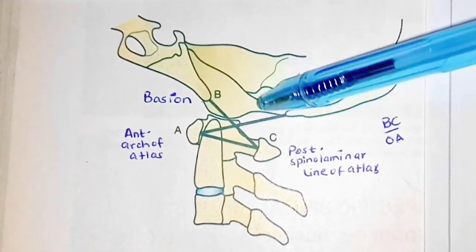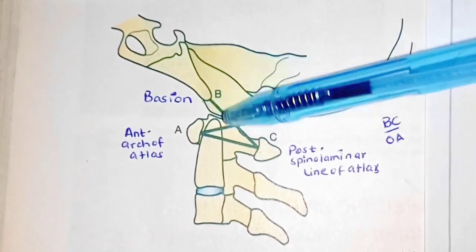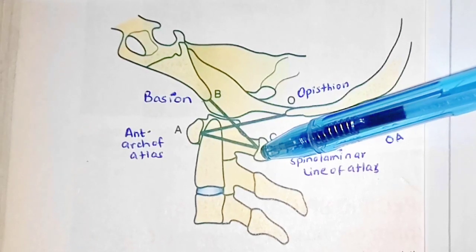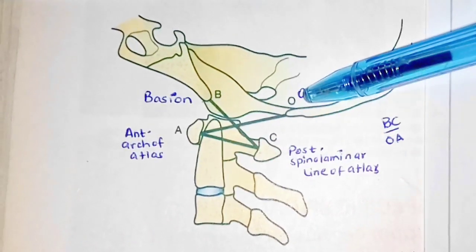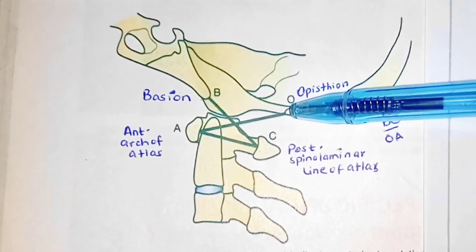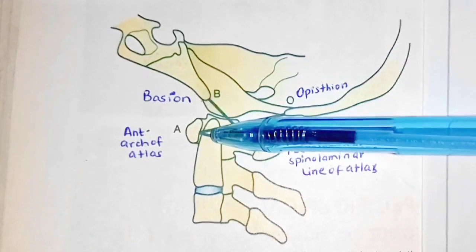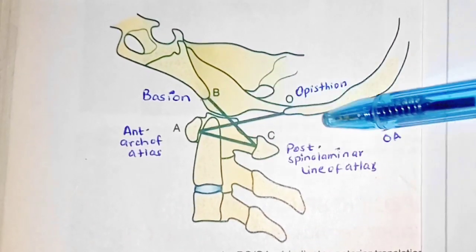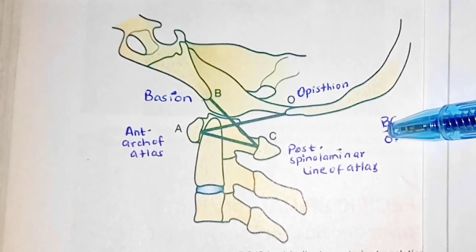BC is basically a line between the basion and the posterior spinolaminar line of Atlas and OA is the line between the opisthion and the anterior arch of Atlas. So this is how we got this ratio BC over OA.